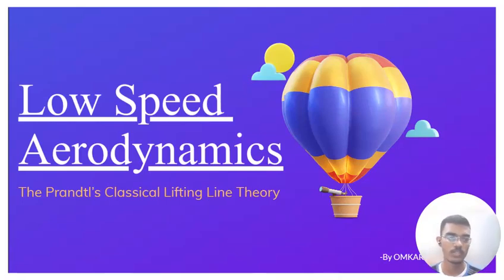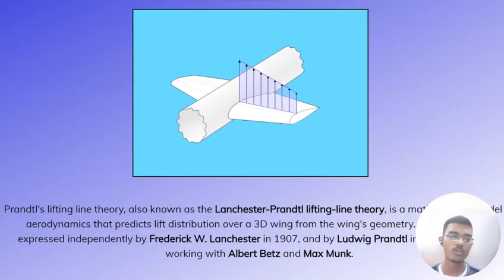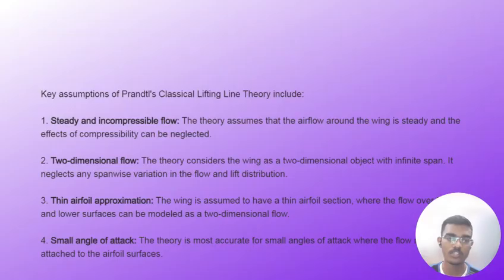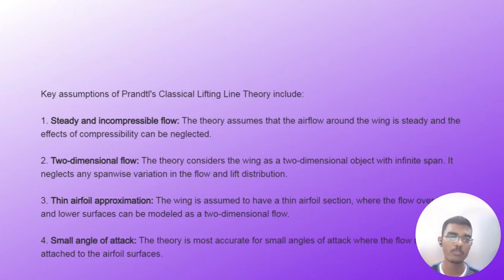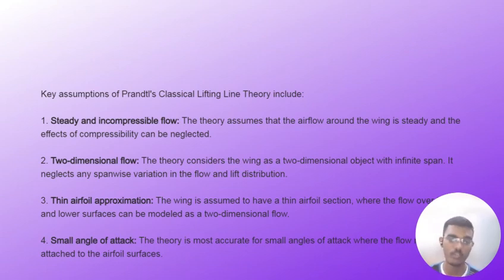The topic of this video is Prandtl's classical lifting line theory, which is a mathematical model of aerodynamics that predicts the lift distribution over a 3D wing. The key assumptions of Prandtl's classical lifting line theory include steady and incompressible flow, two-dimensional flow, thin aerofoil approximation, and small angle of attack.